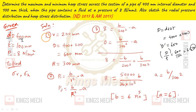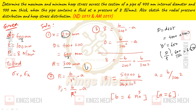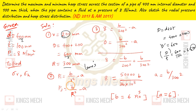Small r = 400 divided by 2 = 200. Capital R = capital D divided by 2 = 600 divided by 2 = 300. As per Lame's Theorem: P1 = B divided by small r squared minus A; P2 = B divided by capital R squared minus A.